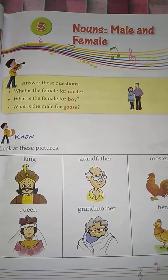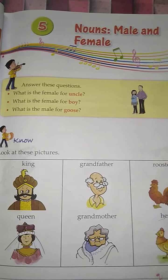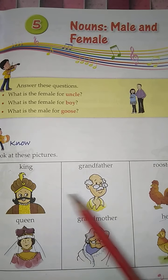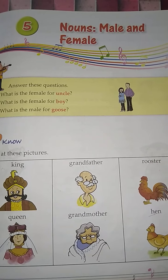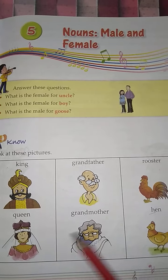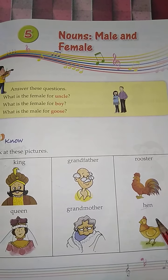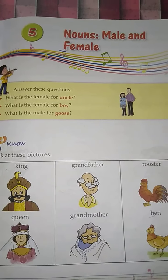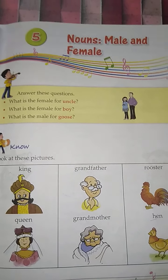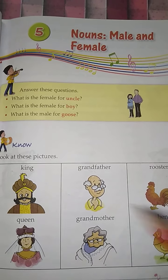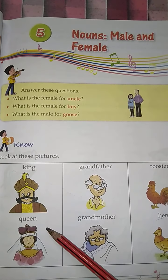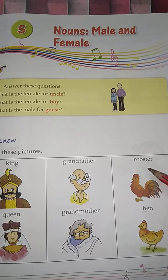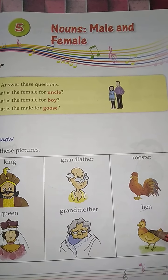First, look at these pictures. I am going to read their names loudly: King, Grandfather, Rooster, Queen, Grandmother, Hen. After reading these, I feel like a male and female pair is given. King is a male, Queen is a female; Grandfather and Grandmother; Rooster is a male, and Cock and Hen.